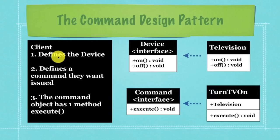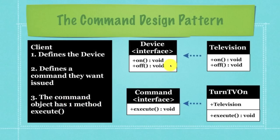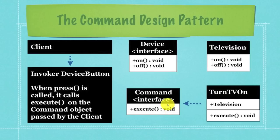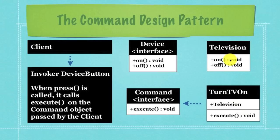Here is the client again. It's going to define a device which is an object containing a whole bunch of different methods that can be run for that device. It's going to define a command to be issued. The command object has one method inside of it called execute. Here is the invoker, which is an object that has a method called press. When press is called, it calls execute on the command object. Press is called on device button, it calls execute on turn TV on, which then tells the television object to execute the on method. In essence, that is the command design pattern.